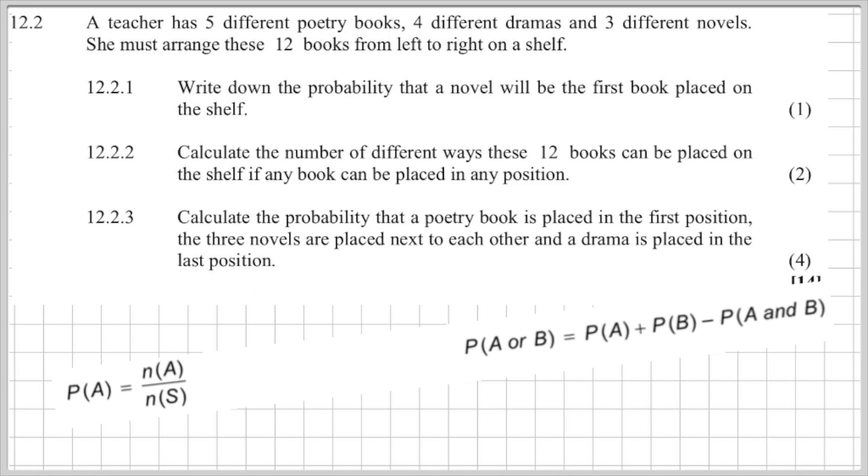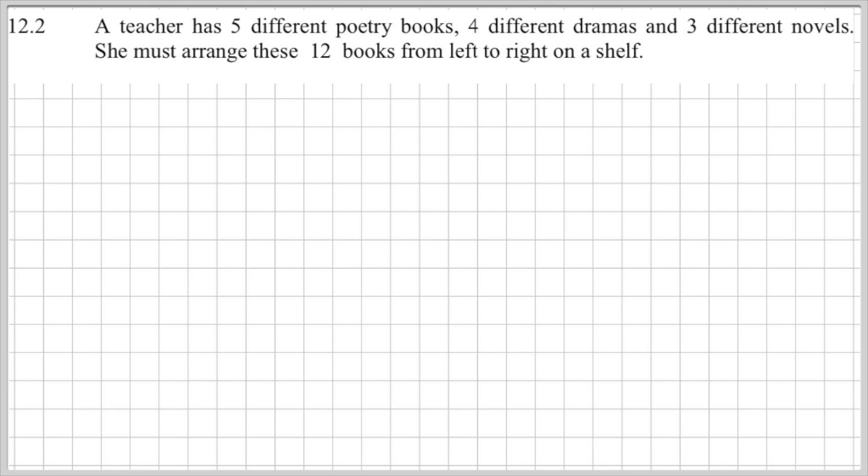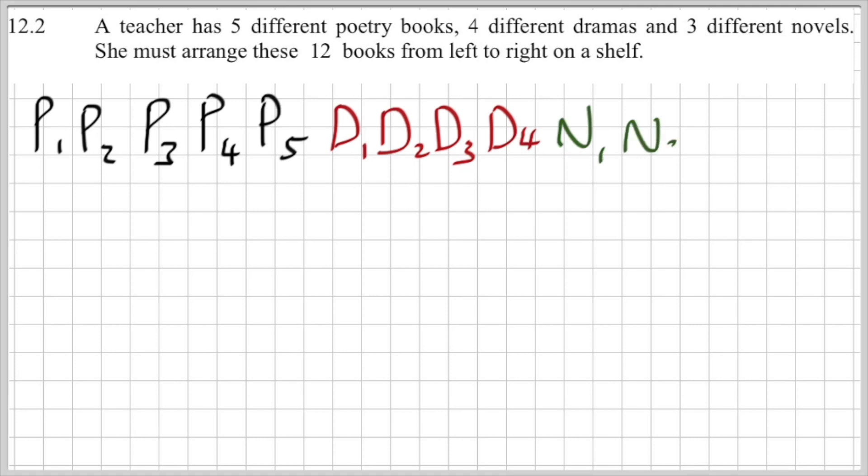When I look at a question like this and they tell me that a teacher has five different poetry books, four different dramas and three different novels, it means all of these books can be distinguished from one another. In other words they are unique elements. When I look at this sum I love to draw it out so I've got five different poetry books, four different drama books, and three different novels.